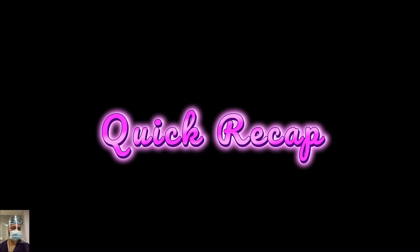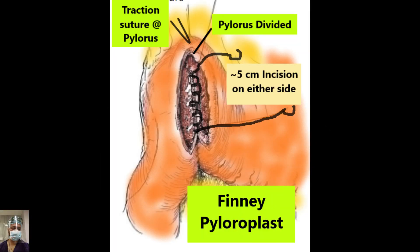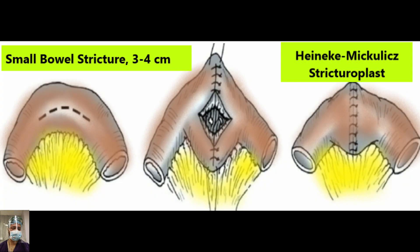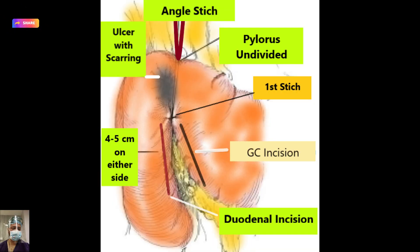For a quick recap: we have already discussed in detail about the Finney Pyloroplasty, the application of Heineke-Mikulicz in Pyloroplasty and small bowel stricture, the Jaboulay procedure — that is, side-to-side gastroduodenostomy — and Michelassi stricturoplasty.